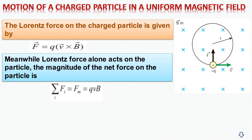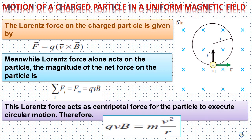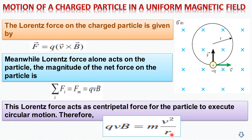F_m is known as the magnetic force. This Lorentz force acts as centripetal force for the particle to execute circular motion. Therefore, QVB equals M times V squared divided by R. From Newton's second law of motion, F equals MA, and V squared by R represents the centripetal acceleration.